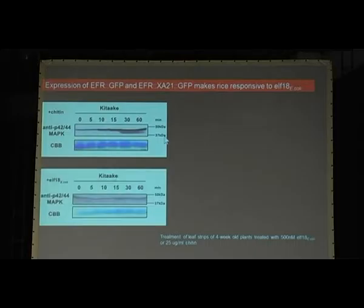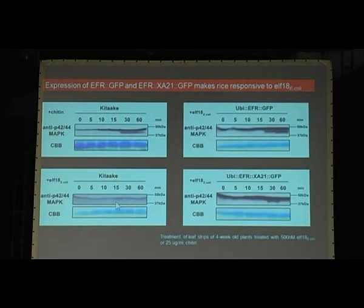Additionally, our second readout was MAP kinase activation. We used an antibody which specifically recognizes the phosphorylated activation loop of MAP kinases. We first tested with chitin, another PAMP. If you use chitin, you see the upper band becomes stronger and you see an additional band, which is indicative of MAP kinase activation. Our control experiment was to put elf18 from E. coli on Kitaake, the rice variety we're using in the lab. You see nothing going on. Yet if you express either EFR-GFP or EFR-XA21, you clearly see the upper band becomes stronger and an additional band coming up in both cases, showing that the signaling pathway is definitely switched on.